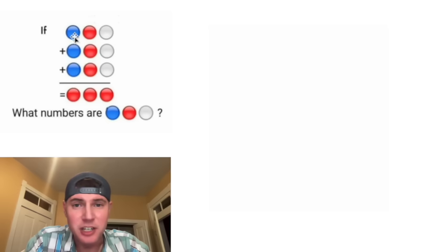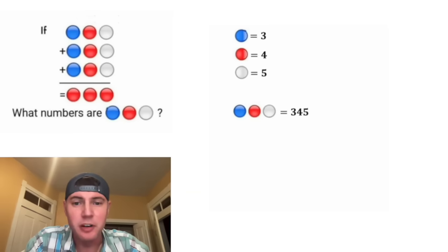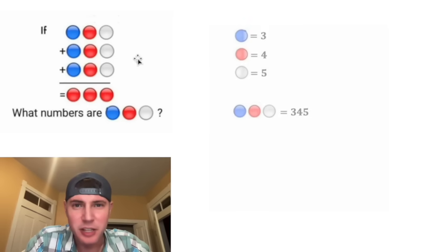I'm interpreting this as a three-digit number, where the blue, the red, and the white are the three digits of that three-digit number. So if we had three, four, and five, then this right here would be 345, not three times four times five. And I'm pretty sure that's the way this was meant to be interpreted.